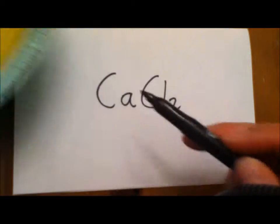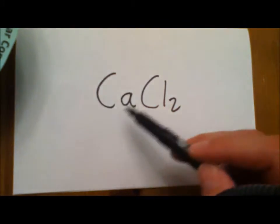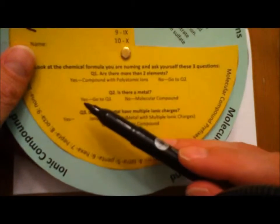Go to question two. Is there a metal? Well, if you check your periodic table, you'll notice that calcium is a metal. So our answer is yes.